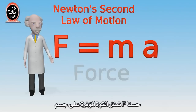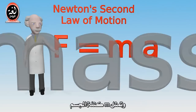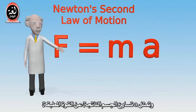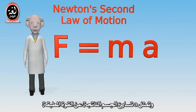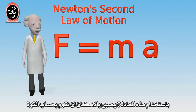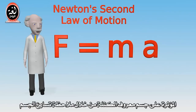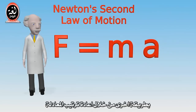F represents the force on the object, M represents the mass of the object, and A represents the acceleration of the object resulting from the applied force. So using this equation, it is possible for us to calculate the force acting on an object of known mass by observing the object's acceleration.